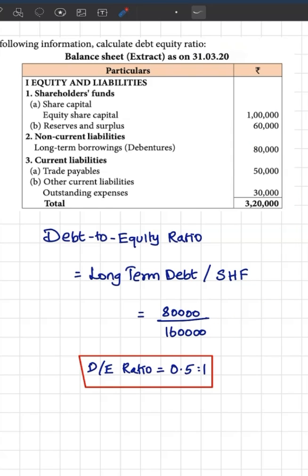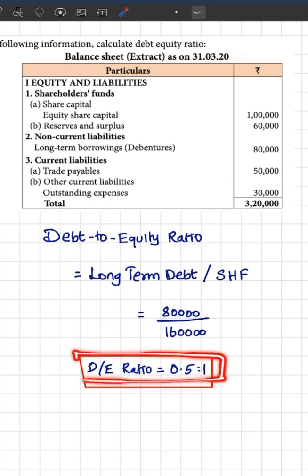Computing the debt-to-equity ratio is very simple. Long-term debt of 80,000 divided by shareholders' funds of 1,60,000 gives the value as 0.5, and expressed as a ratio, it is 0.5 is to 1.